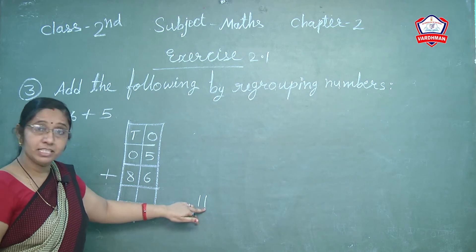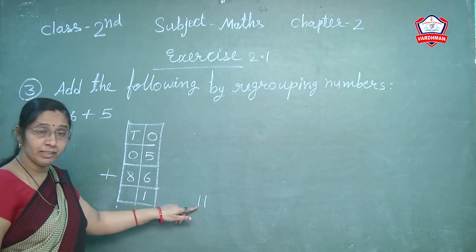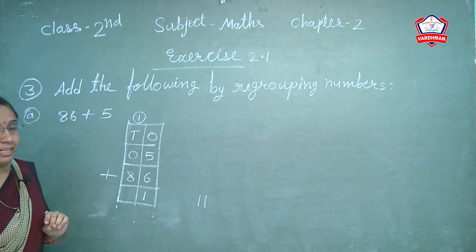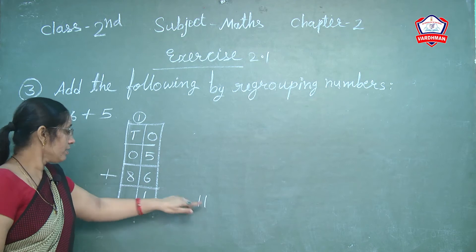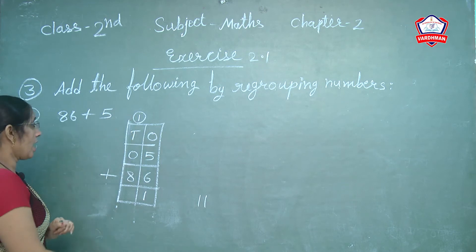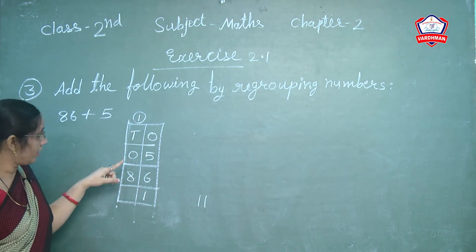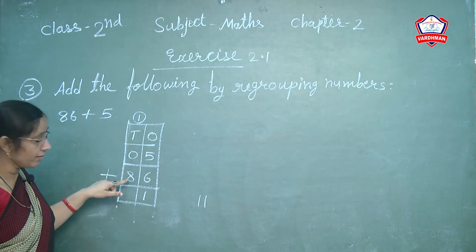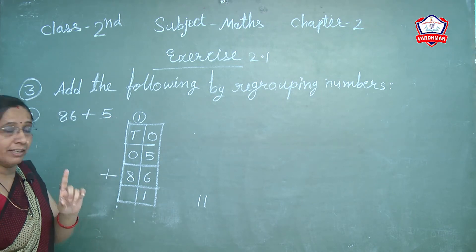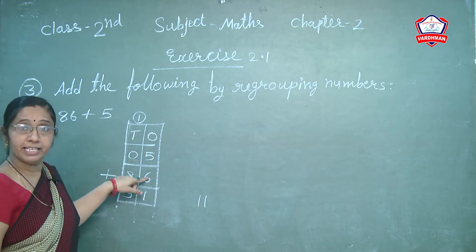11 means 1 is ones and 1 is tens. So write 1 in the ones column and carry 1 forward to the tens column — this is carry addition. Now add the tens column: 1 carry plus 0 plus 8 equals 9. So write 9. Therefore 5 plus 86 is equal to 91.